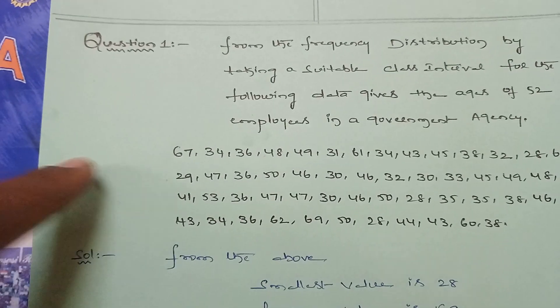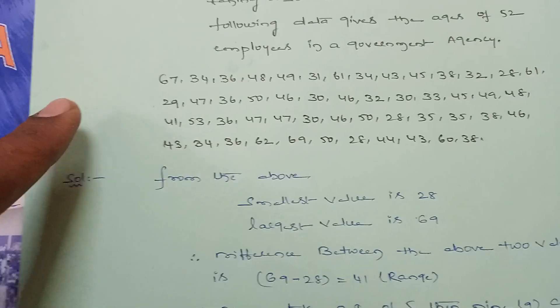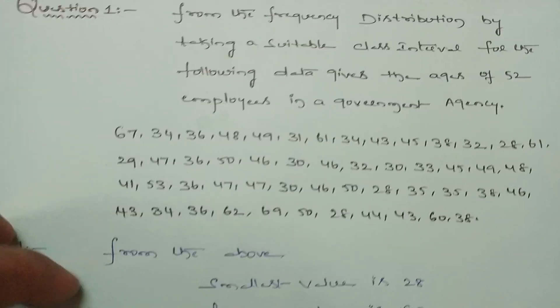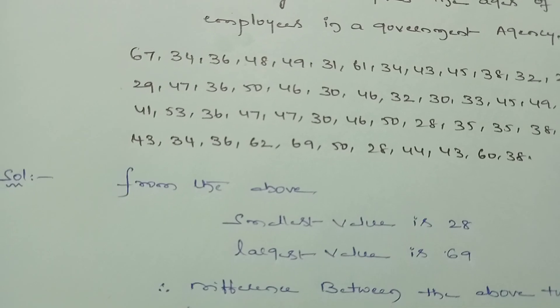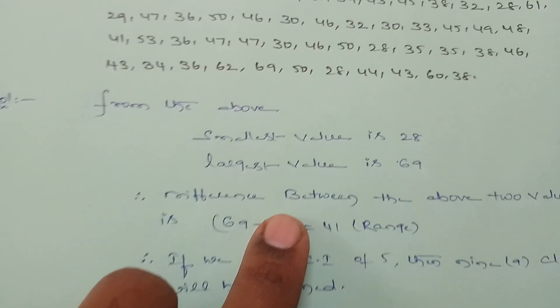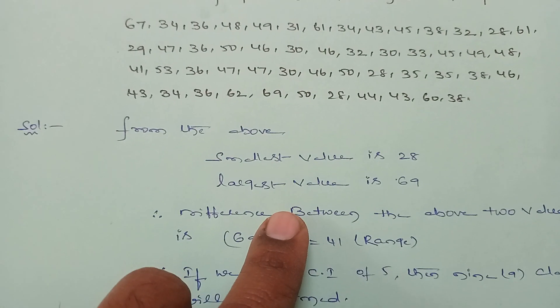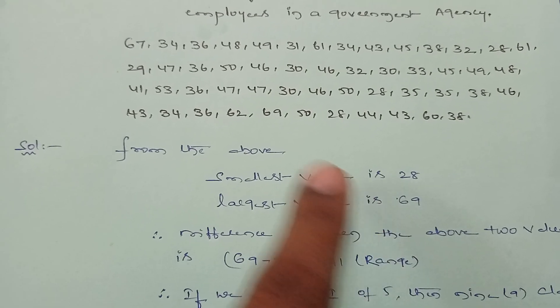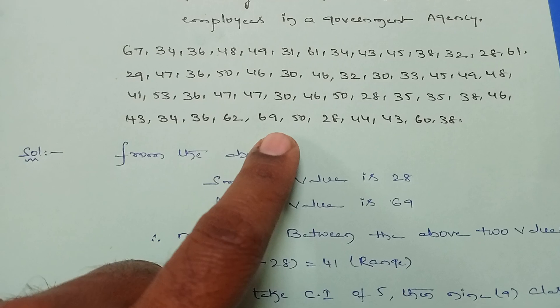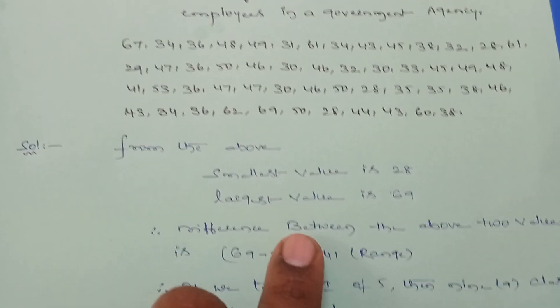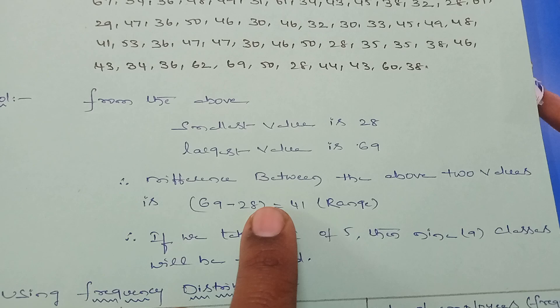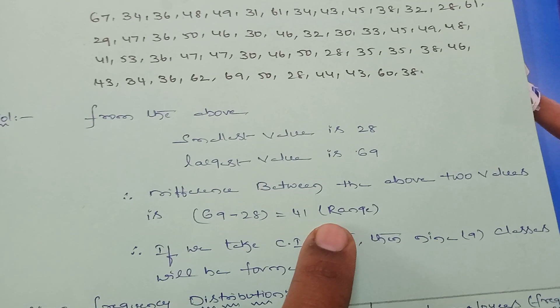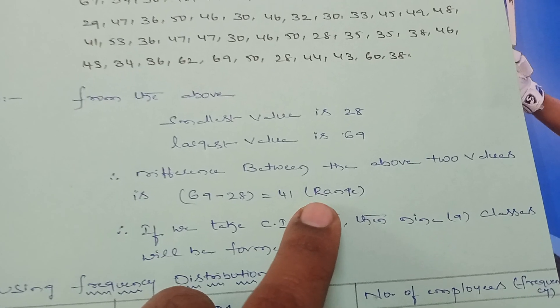Before doing this sum, first we need to find the range. What is the least value in the given observations? 28 is the least value and 69 is the greatest value. The difference between these two is 41, which is the range.